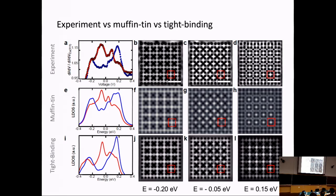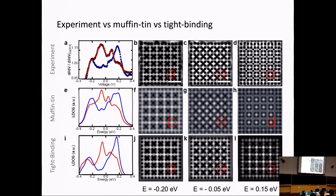You can now sit at certain energies and look at wave function maps. At one energy, the red and blue sites have the same intensity. At minus 0.05 eV, the red edge sites are very intense and the blue is suppressed. At a different energy the blue is intense and the red suppressed. Theory explains very well the wave function mappings we observe.